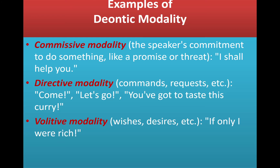Deontic modality has three further subtypes. Number one is commissive modality — the speaker's commitment to do something, like a promise or threat: 'I shall help you.' Number two is directive modality — commands and requests: 'Come on, you have got to taste this curry.' Number three is volitive modality — expressing wishes and desires: 'If only I were rich,' 'If only I had a car,' 'I wish I were there.'